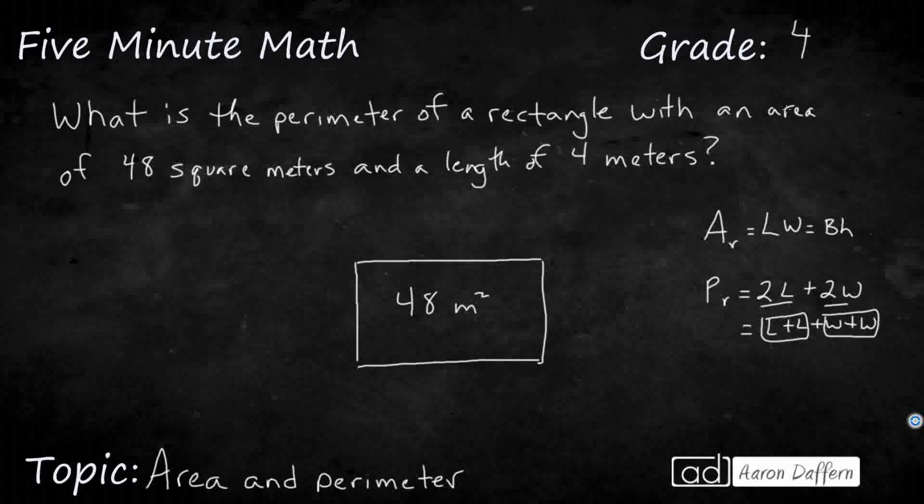They give you the length of 4. So let's put that here. If the length is 4, then I know my area—I'm going to substitute. My area of 48 equals the length, which is 4, times my width. So, 4 times what makes 48?